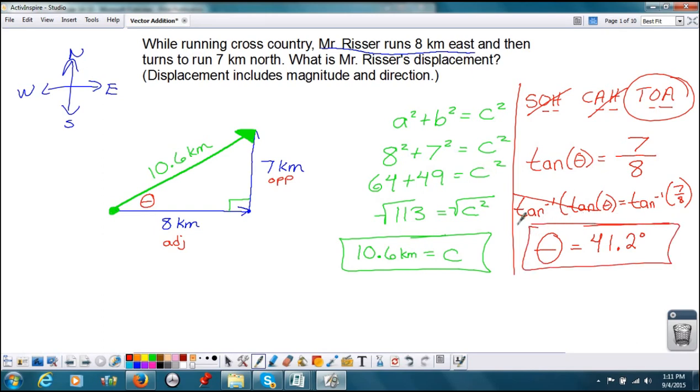And now this, if we have a picture, we know what angle we're talking about. If we don't have a picture in front of us, we might not know. So we should really write it out a little better. So I'm going to say that his displacement is 10.6 kilometers at 41.2 degrees, and then I'm going to put some information in here. I'm going to say that to get to this angle, I went north, in the direction north of east. I started with east and went north, so I'm going to say it's 41.2 degrees north of east.